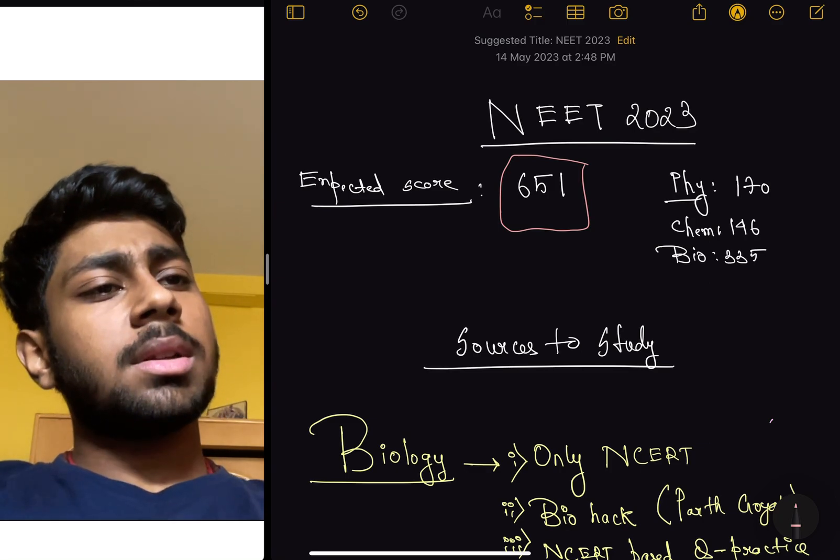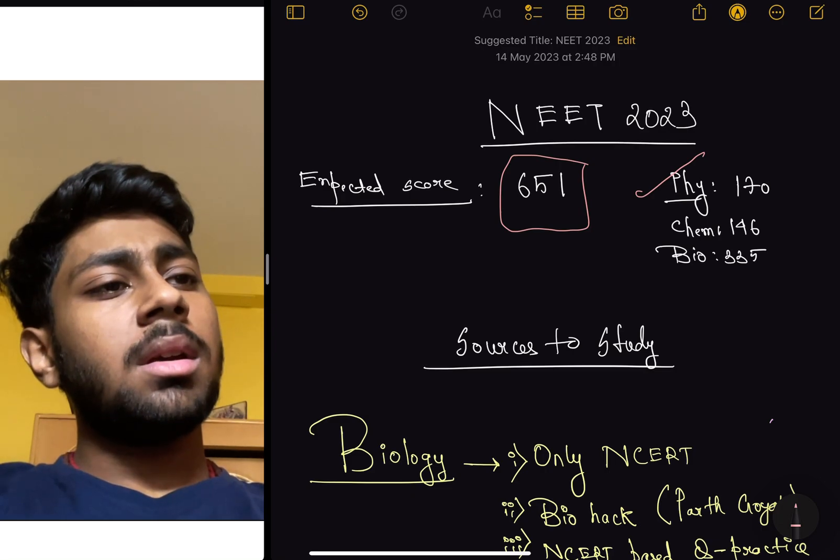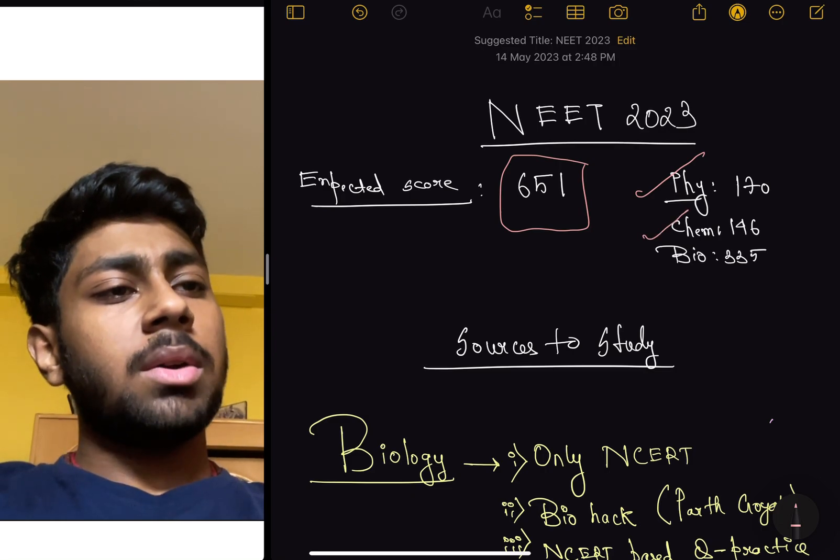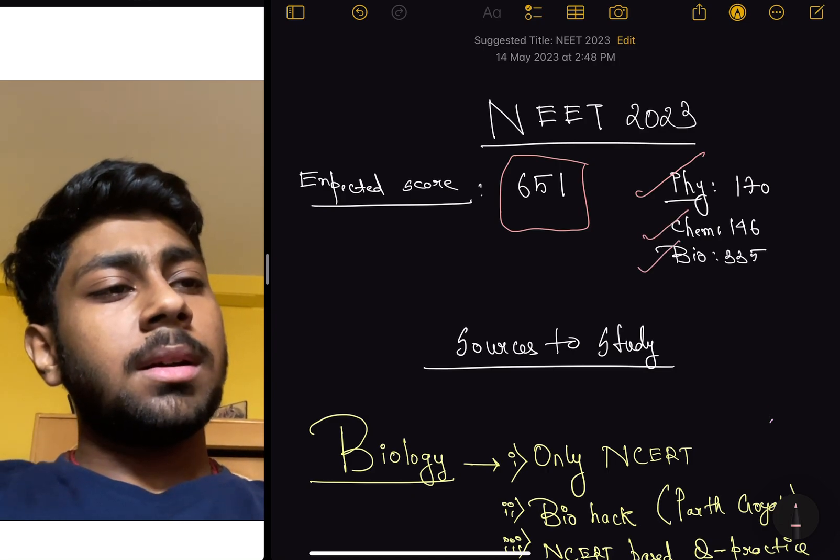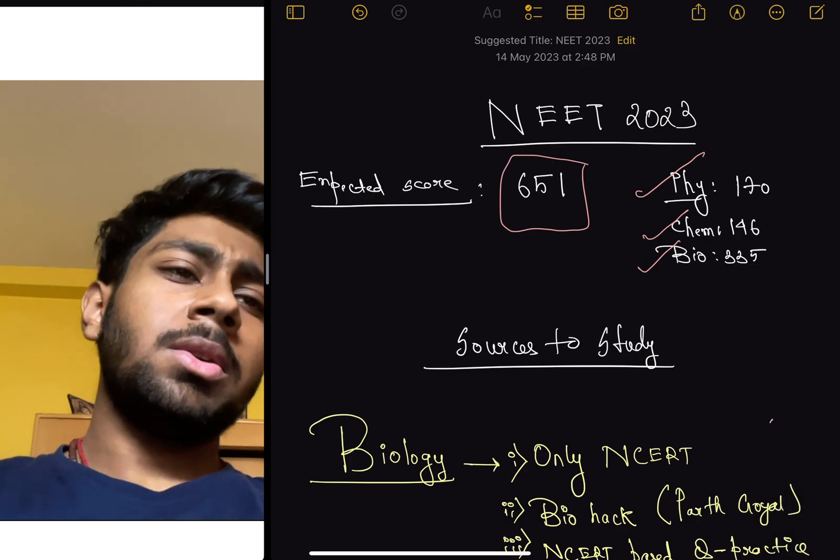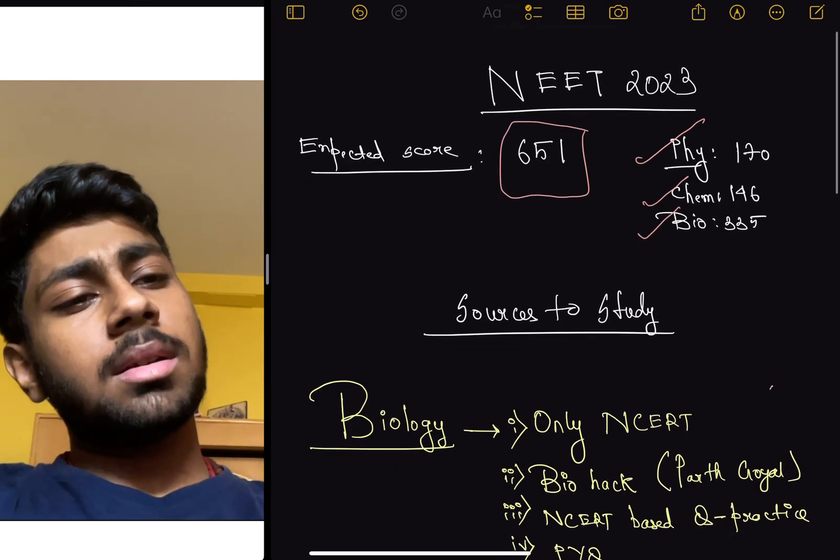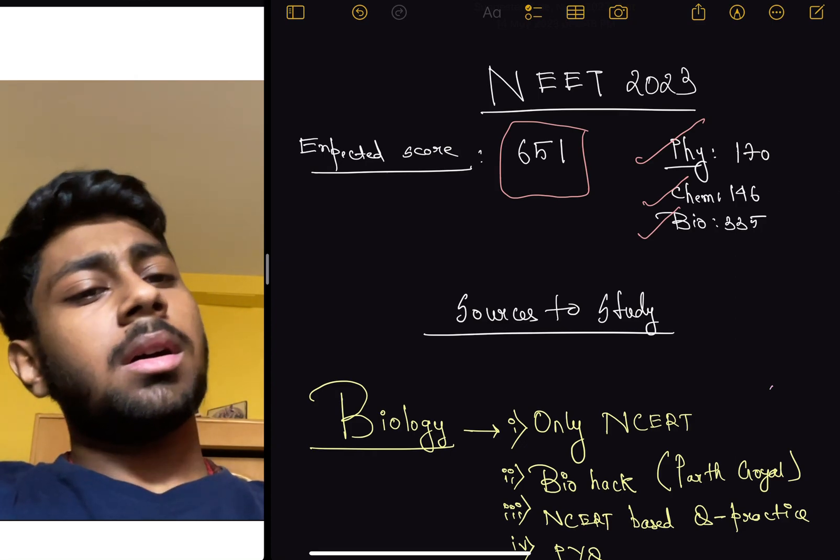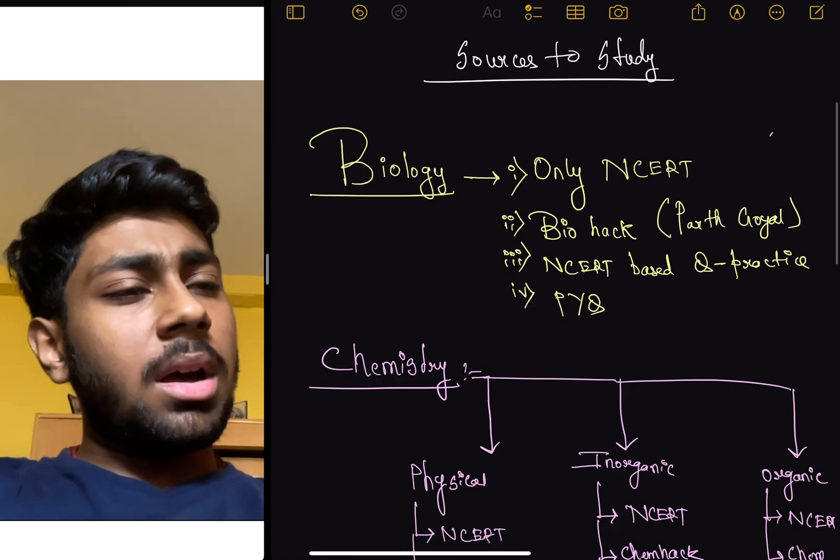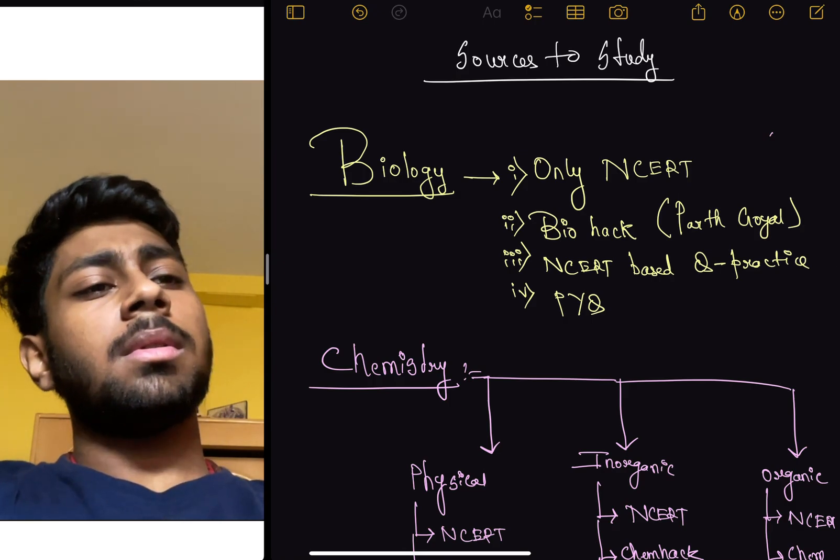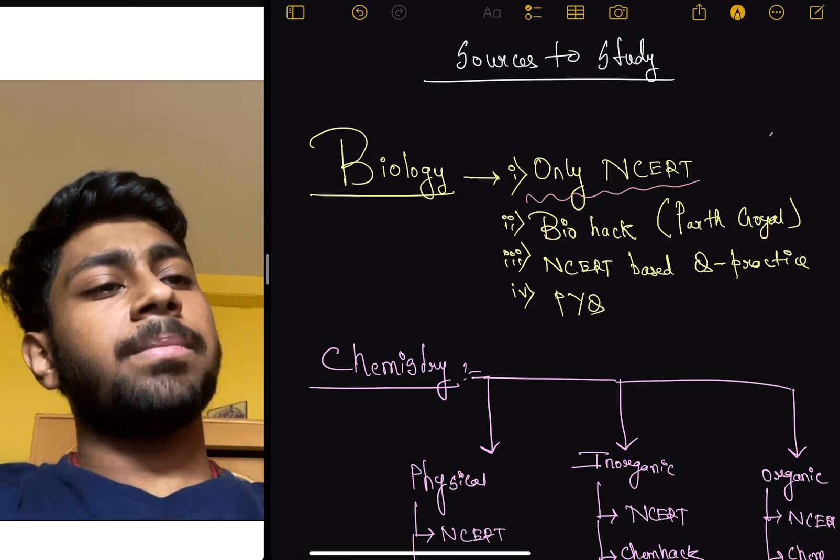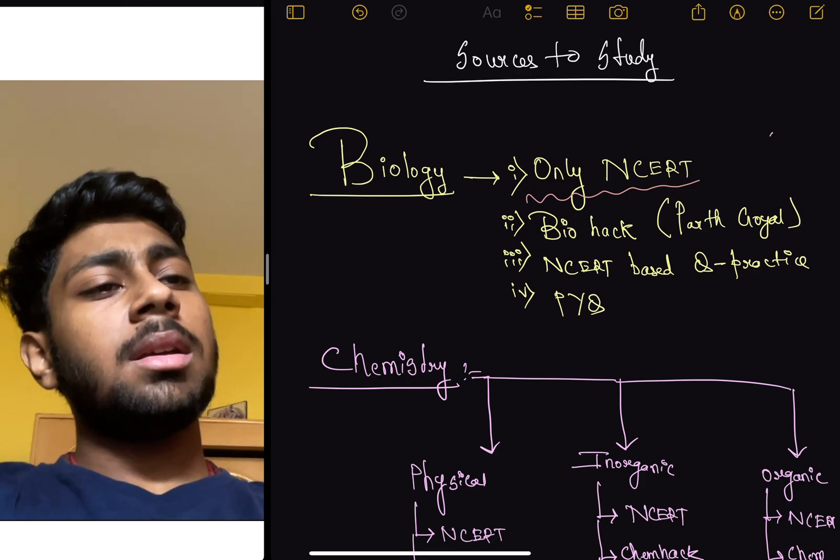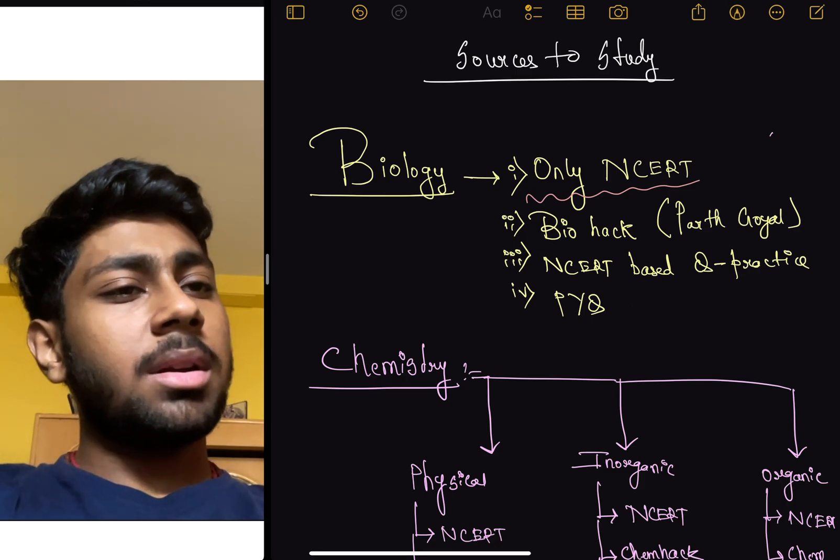My subject scores are Physics 170, Chemistry 146, and Biology 335. Today we'll discuss the sources I studied in the last six months of my preparation. In biology, we'll focus mainly on the NCERT. Each and every line of NCERT is important in biology.